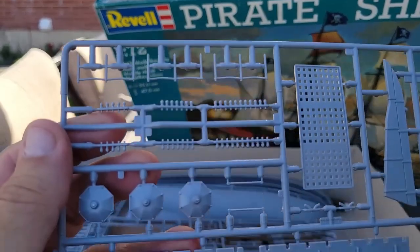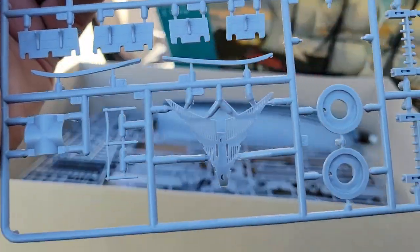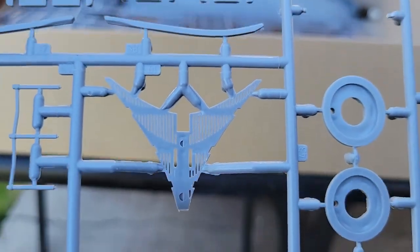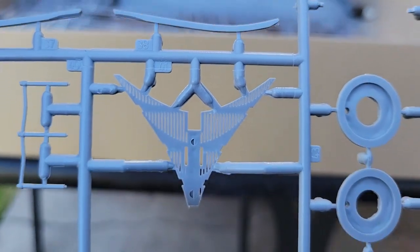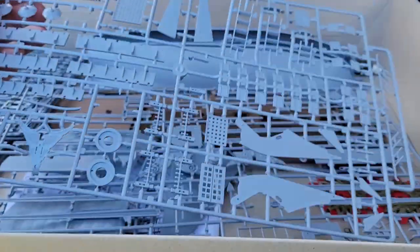Let's see what else we got here. Oh, we got parts of the front of the ship. Here we've got the doors for the cannons. The detail on this is just superb. Look at this, how fine that is. Wow, yeah, I'm impressed.